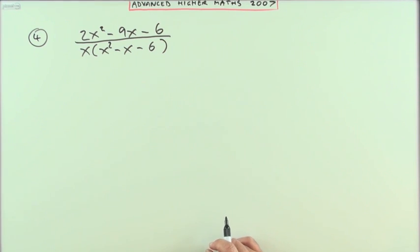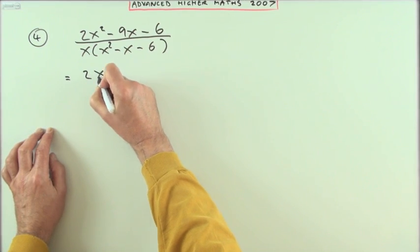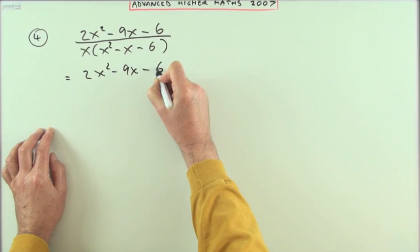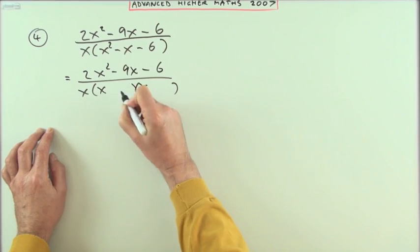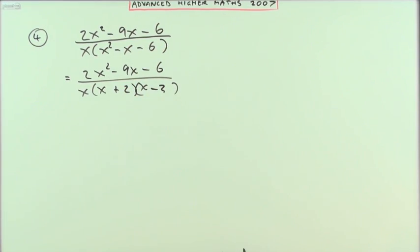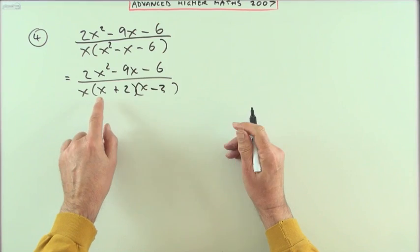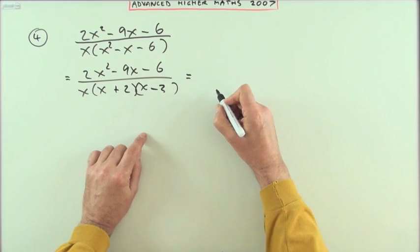So I'll just write it again down here. I've got 2x² - 9x - 6 over x times, then that must be x times x for the first, must be a 2 times a 3. The negative will go to the larger since they're opposites. So I've got three nice clear distinct linear factors in the denominator.